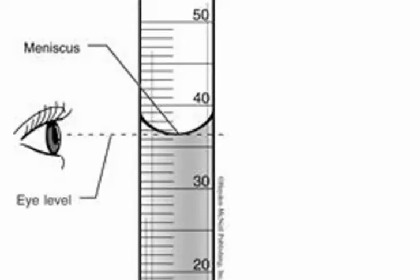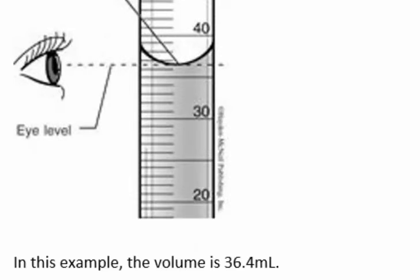An important feature when recording liquid volumes is to have your line of sight directly in line with the meniscus of the solution. In this example, the volume is 36.4 milliliters.